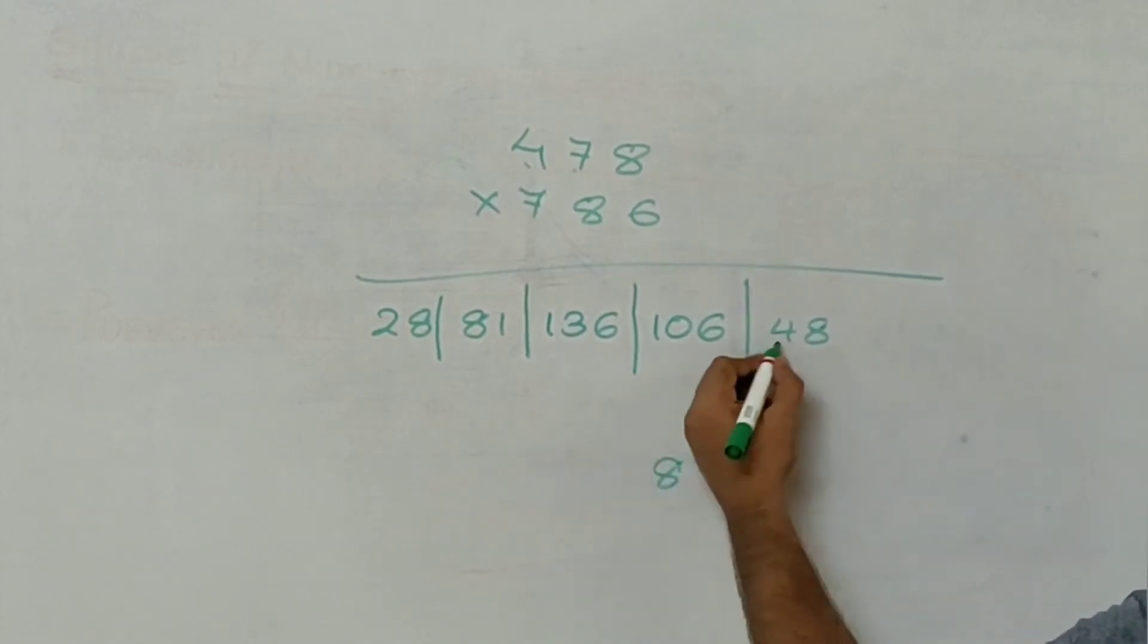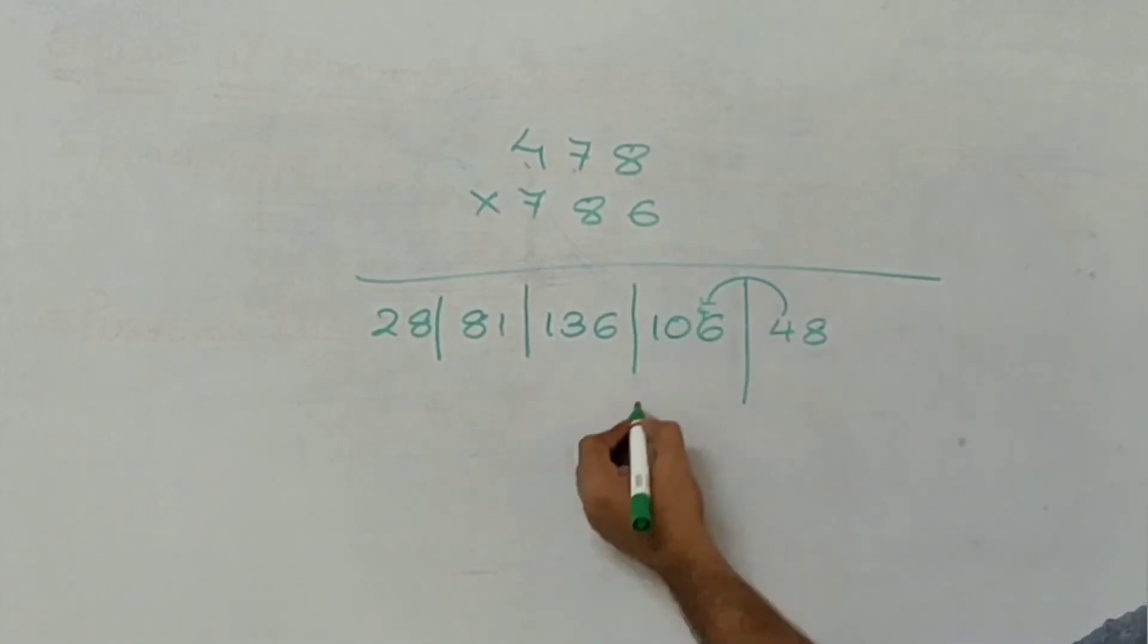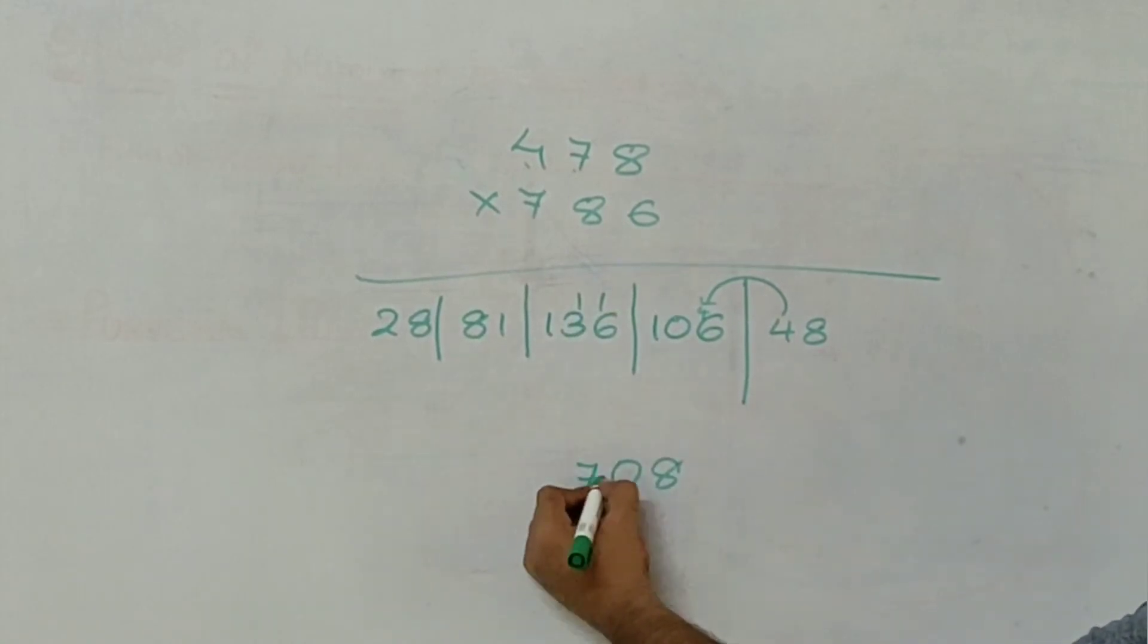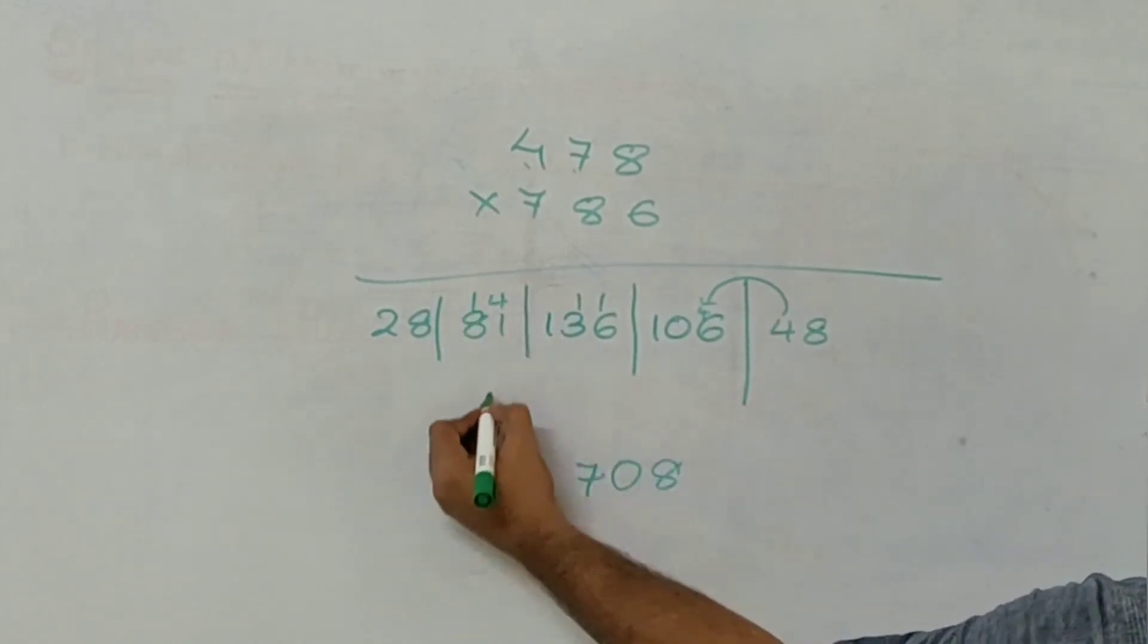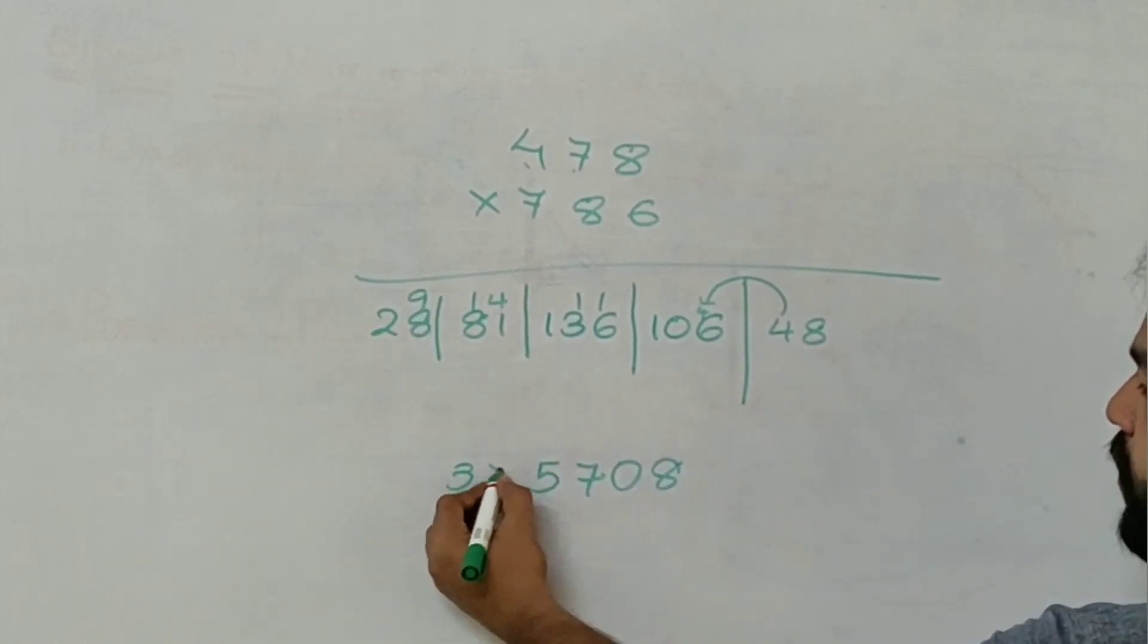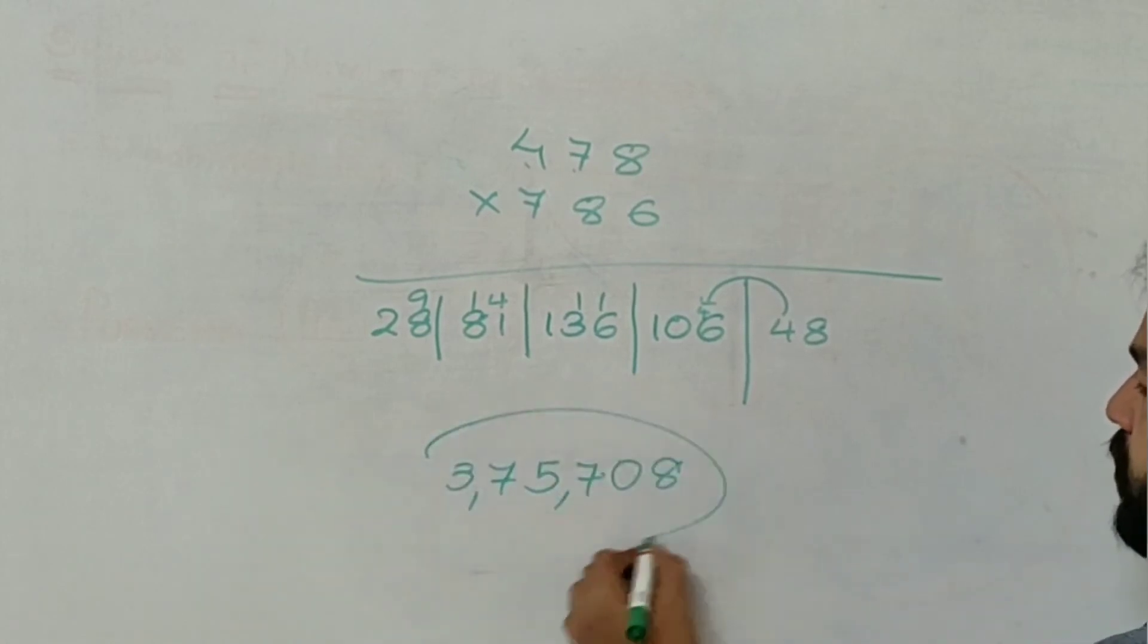So 8, 4 carry here. 106 plus 4 is 110. 136 plus 11 is 147. 81 plus 14 is 95. 28 plus 9 is 37. So the answer is 375,708.